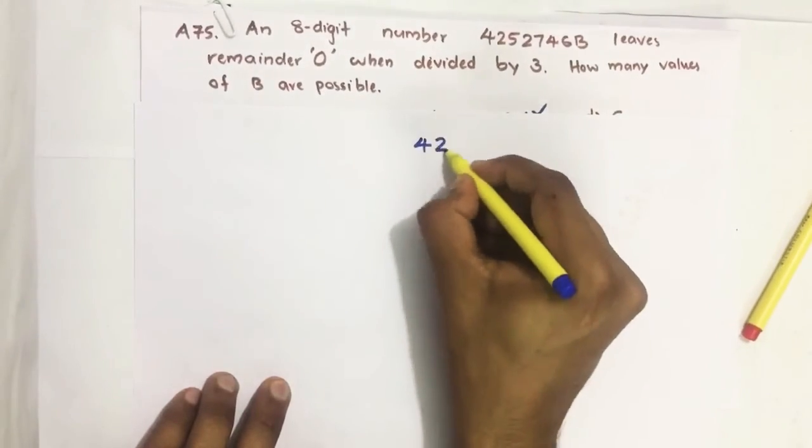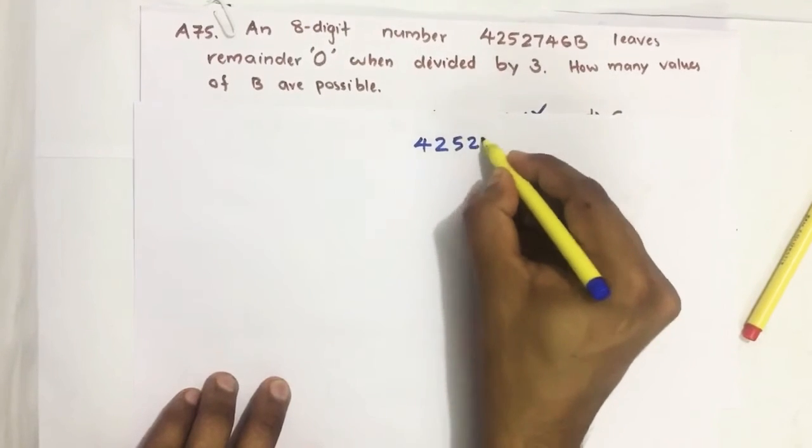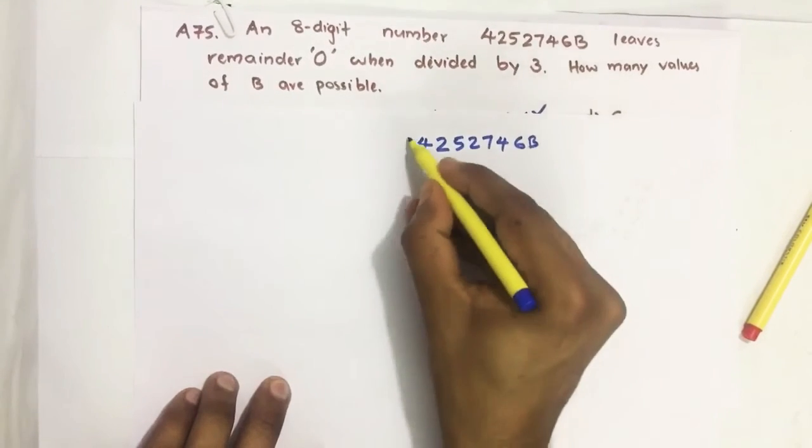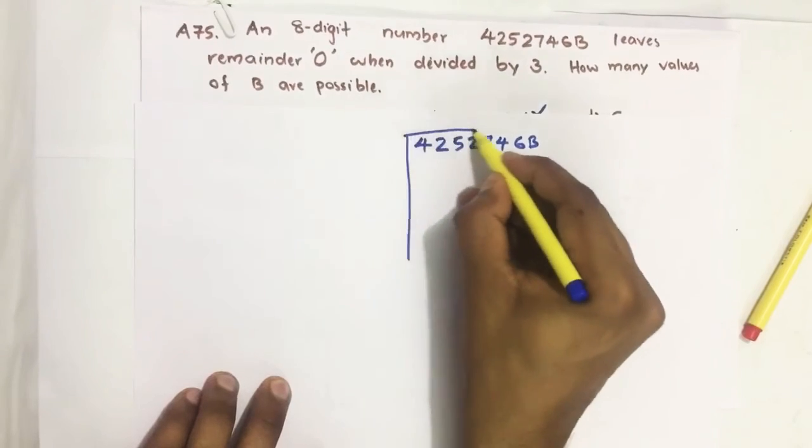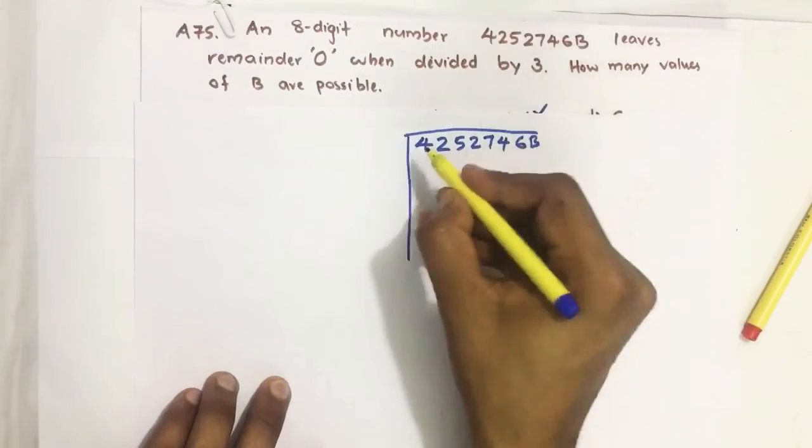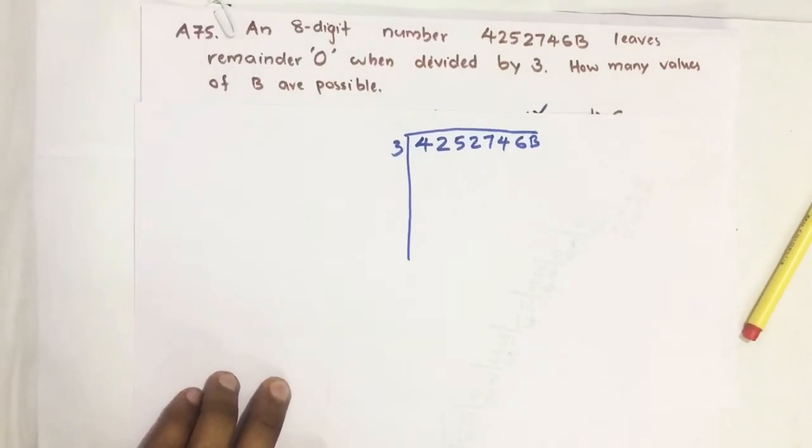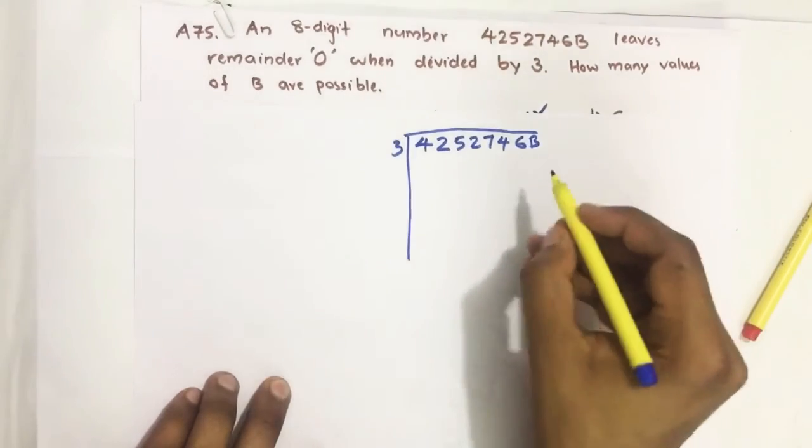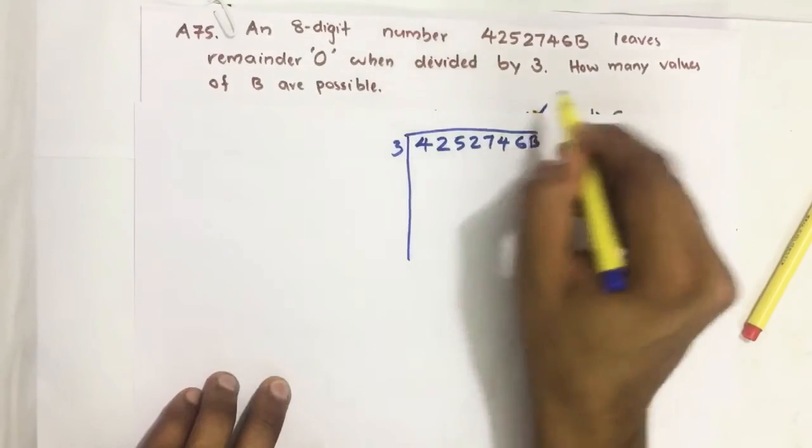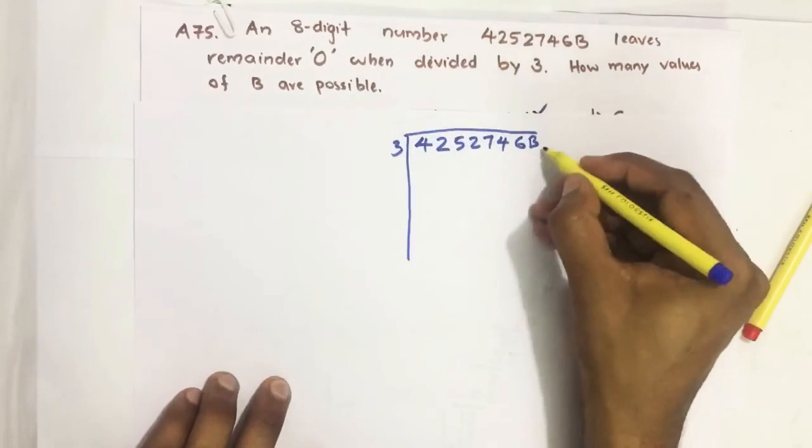So a number is given, an 8-digit number 4252746B. Everyone knows how to do division. Here we have to divide this number by 3, and it is said that the remainder is 0. Then what is the value of B?